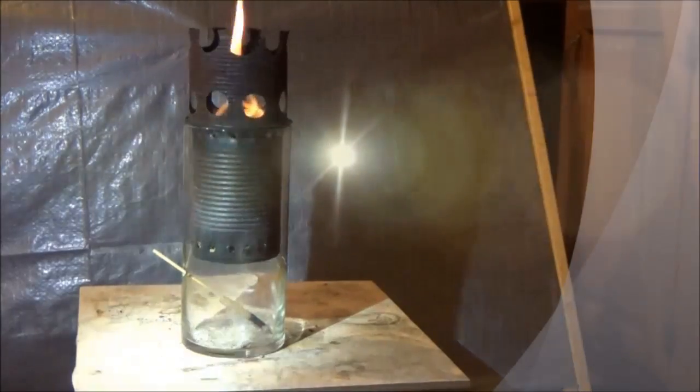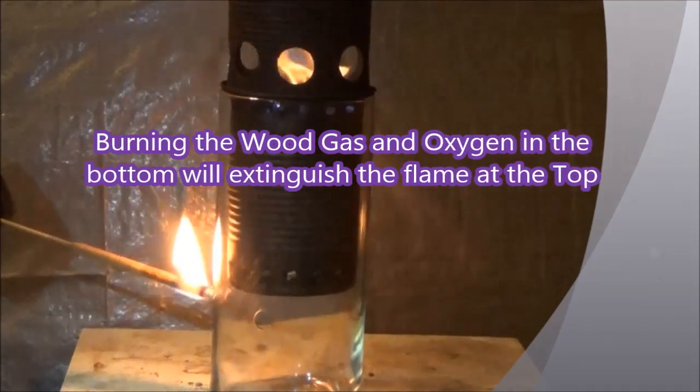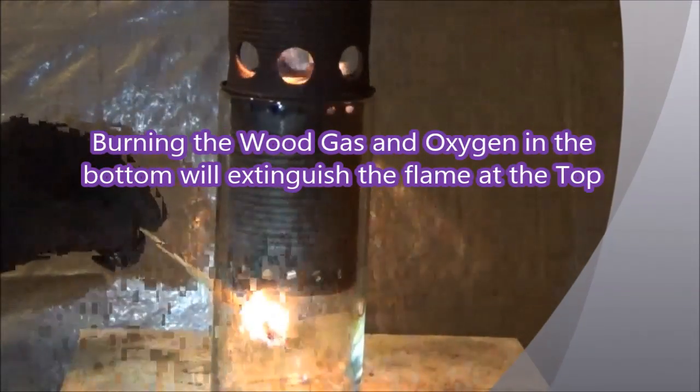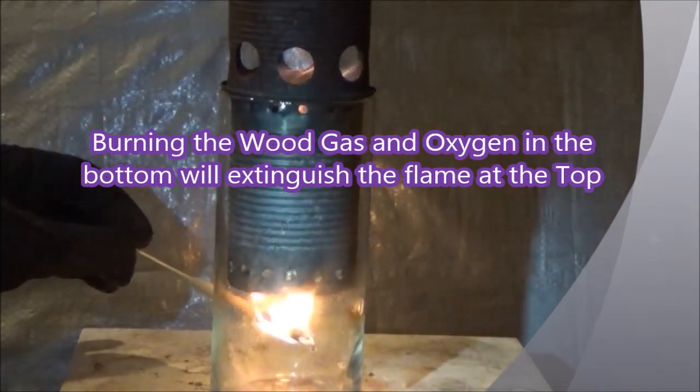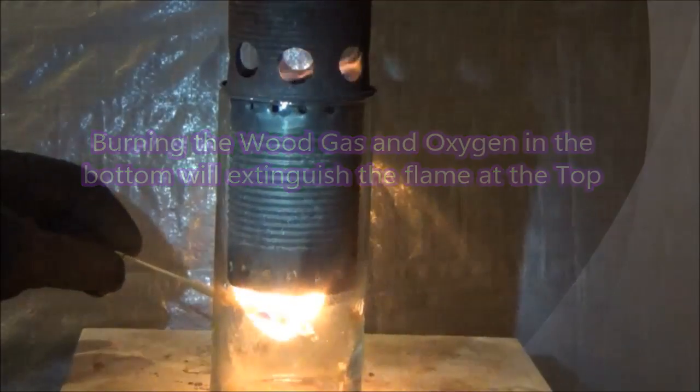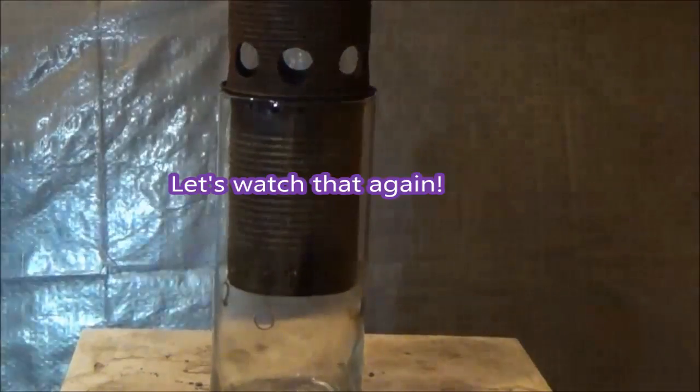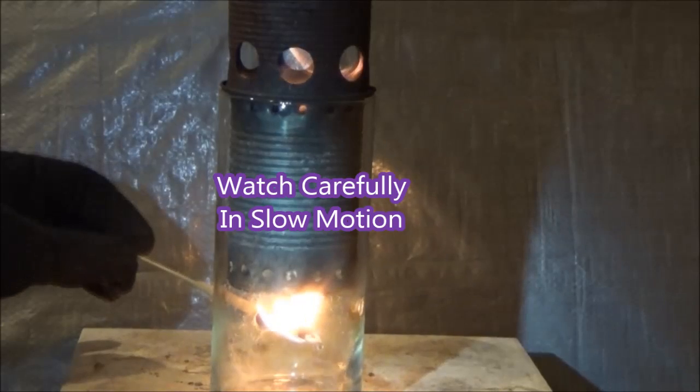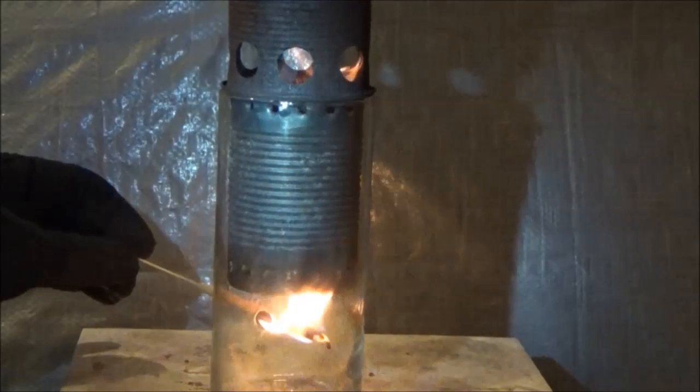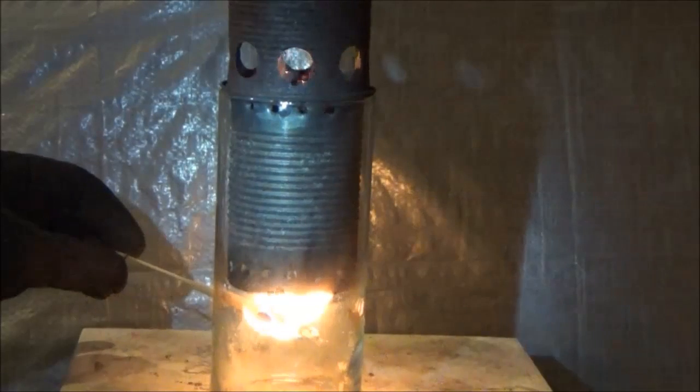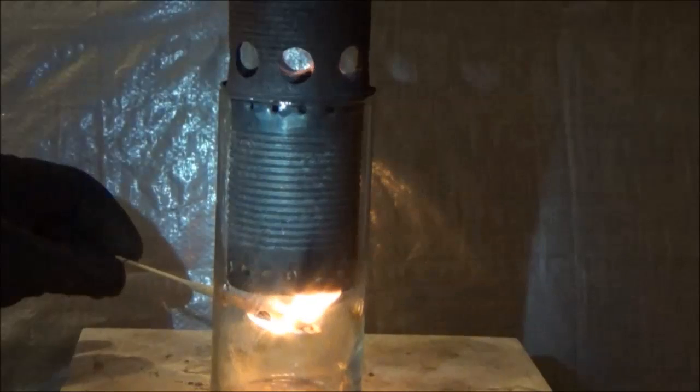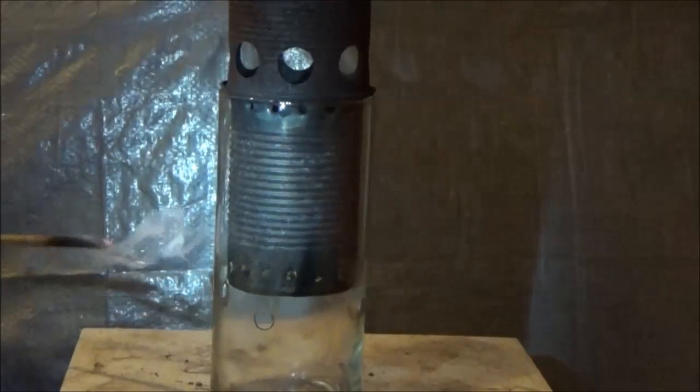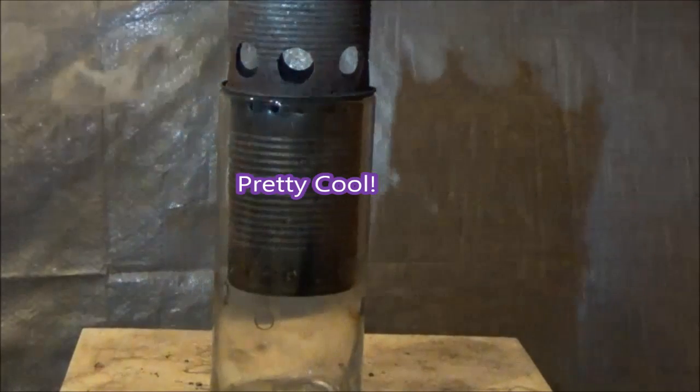This next clip will show that if you burn enough of the wood gas coming out of the primary air holes, you can actually extinguish the flame at the top. So here you'll see that the flame underneath is burning bright and burning a lot of the wood gas and the flame at the top just went out. Let's watch that again. Pretty cool, huh?